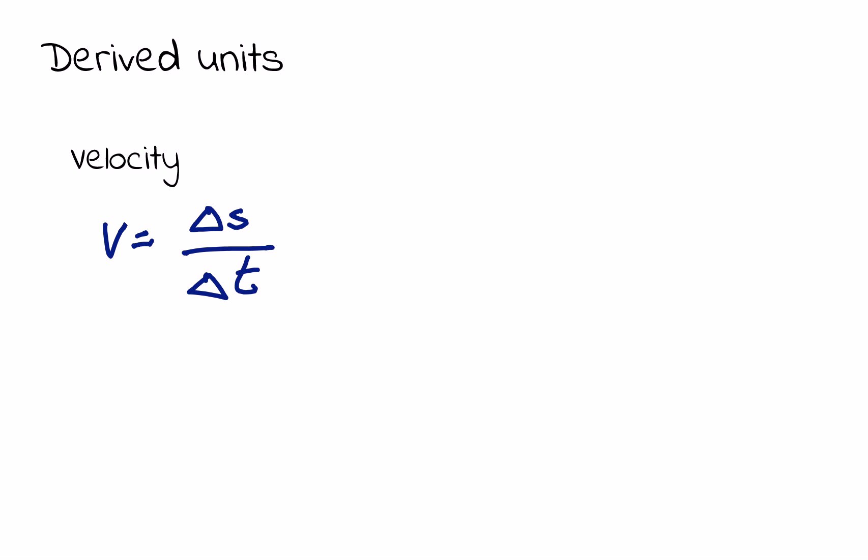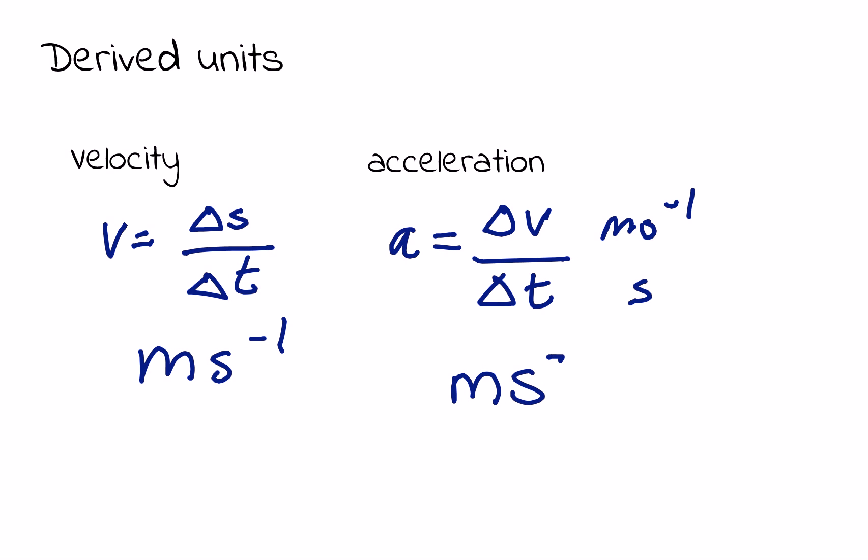Second example would be acceleration. Acceleration is defined as the rate of change of velocity, so the change in velocity Δv divided by the change in time Δt. Because velocity is already in meters per second and time is in seconds, as we combine these two together we get meters per second squared.